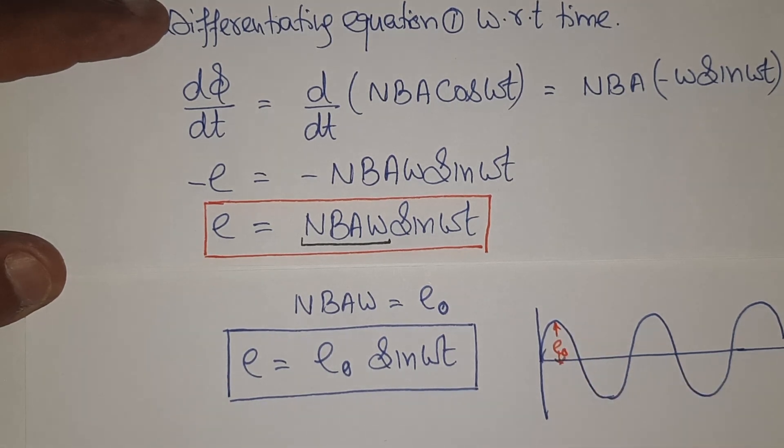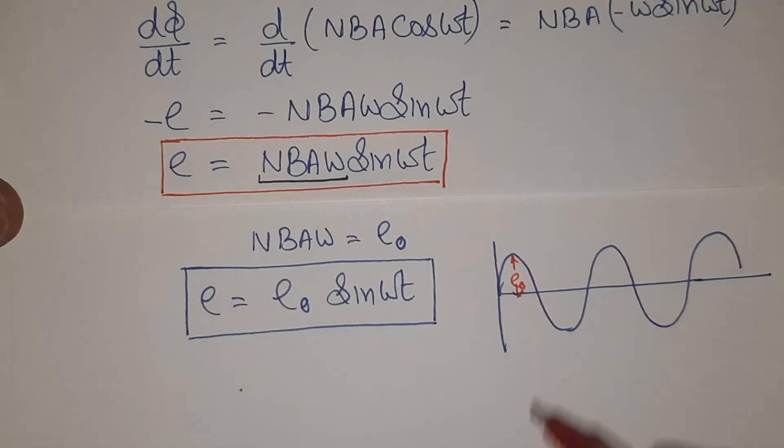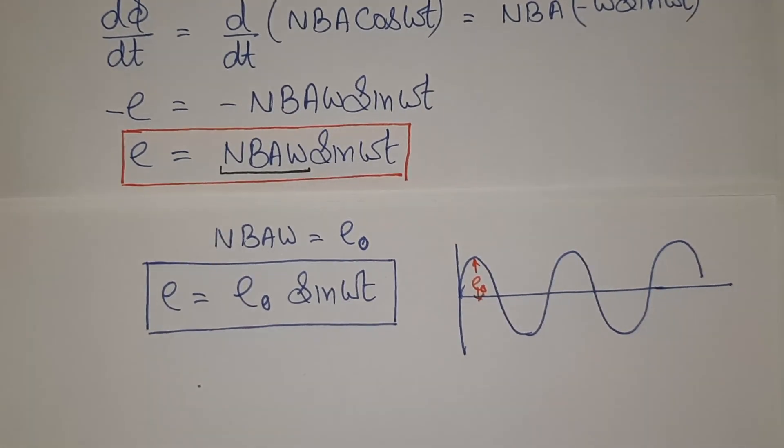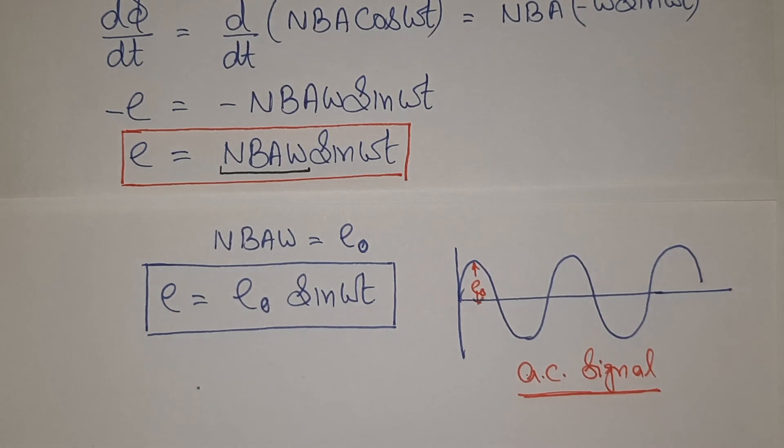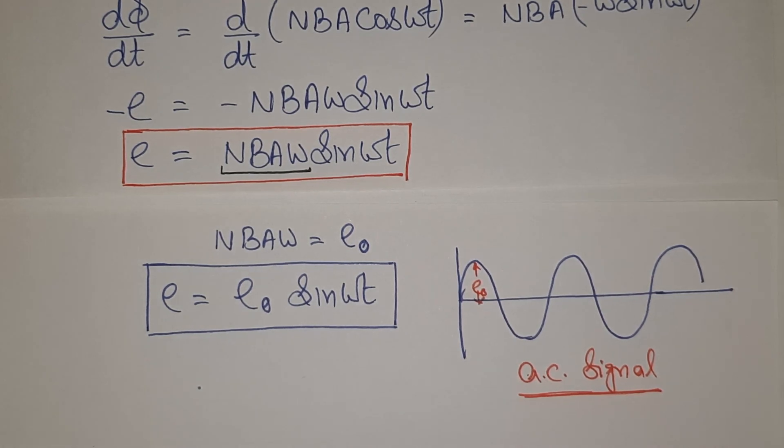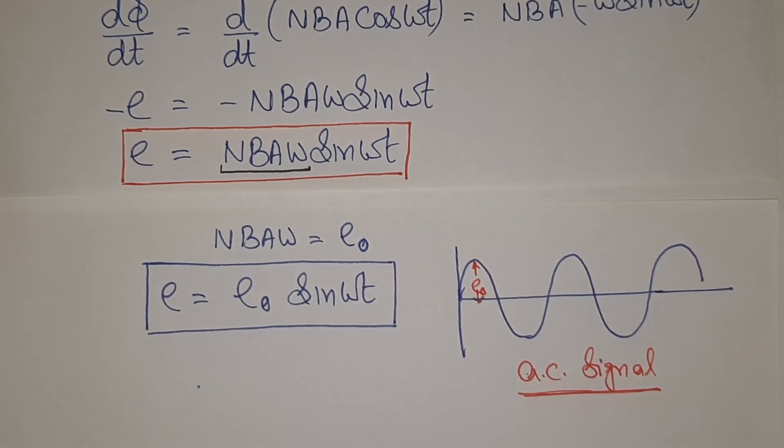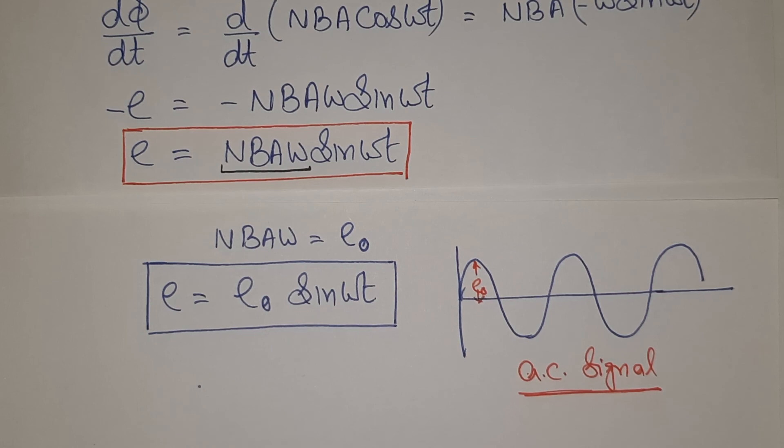This is an AC signal alternately toggling between positive and negative values. So this basically is the AC produced, AC signal as produced by the equipment whose basic design we have just concentrated on. In the next lecture, we will be concentrating on AC generator in a specific manner when we will be taking basic principle, construction and all the things separately. You just understand this basic idea, so hence we have got an AC generator.